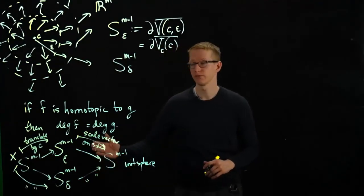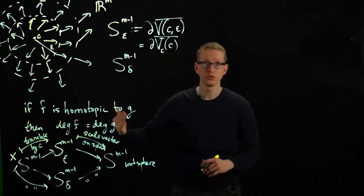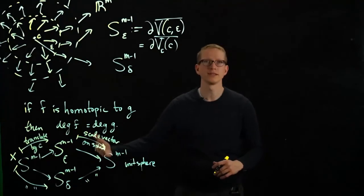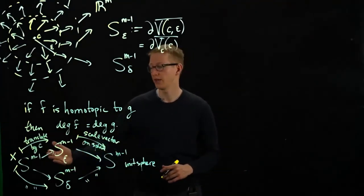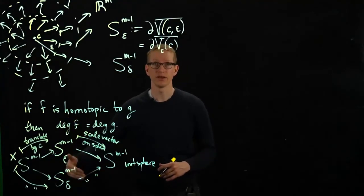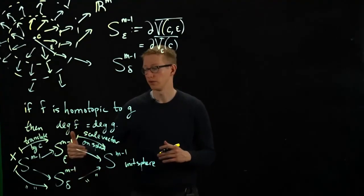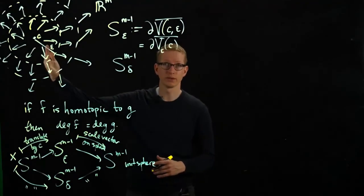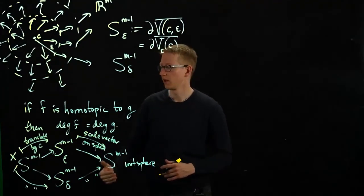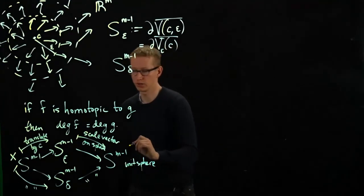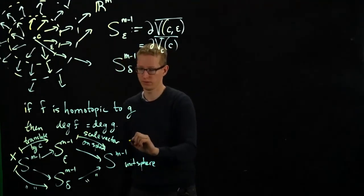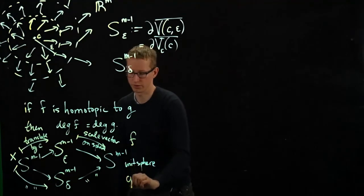And this defines two functions from the same domain to a codomain, which happens to be the same in this case because they're both unit spheres. But the point of this is that now we have two different functions, f and g, that define the index, or the supposed index that a priori depends on epsilon and delta. And we want to show that the two are actually homotopic. So let me call the top arrow f and the bottom arrow g.